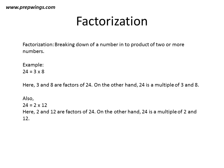All these numbers 3, 8, 2, and 12 are factors of 24. If we list all the factors of 24, those are 1, 2, 3, 4, 6, 8, 12, and 24.